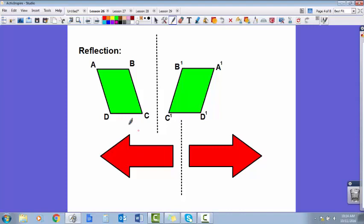So you can see that on this side, C was the closest to the line of reflection. C is still closest to the line of reflection here, the same distance from the line of reflection as the other one. A was the farthest away. A is the farthest away here.